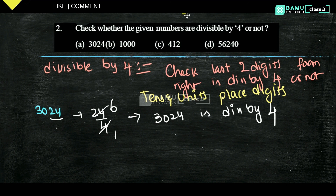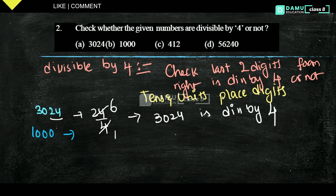Our next number is 1000. The last 2 digits are 00. 00 divided by 4 is 0, so it is divisible by 4. Therefore 1000 is divisible by 4.